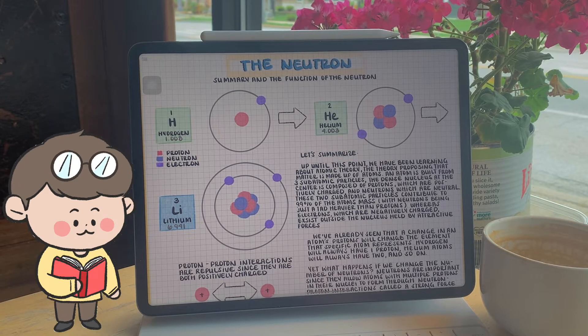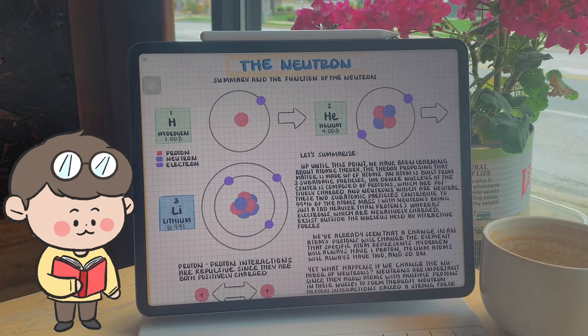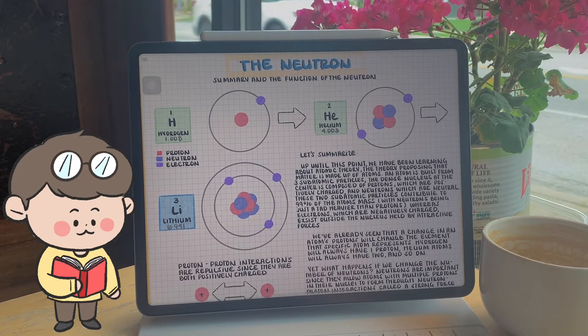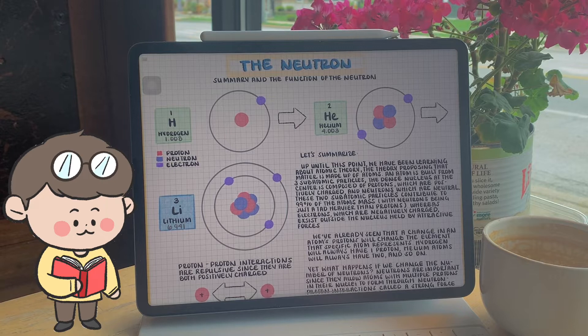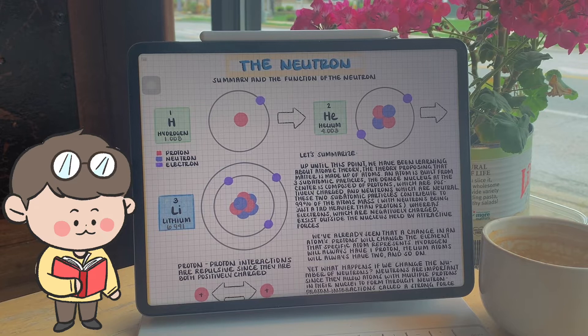The dense nucleus at the center of the atom is composed of protons, which are positively charged, and neutrons, which are neutral. These two particles contribute to 99% of the atom's mass, with neutrons just ever so slightly being heavier than protons,